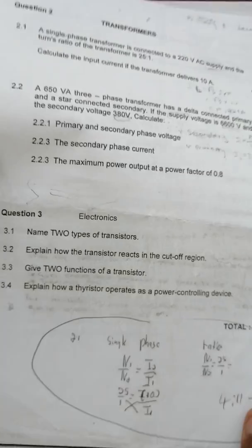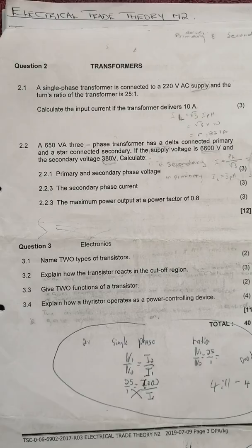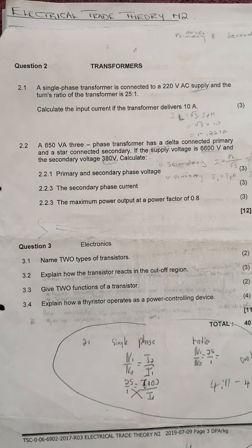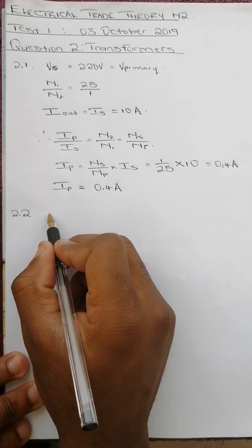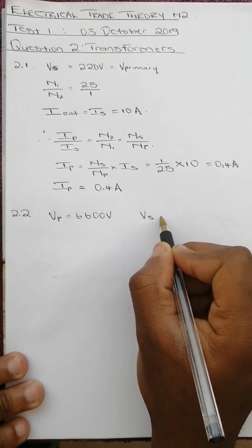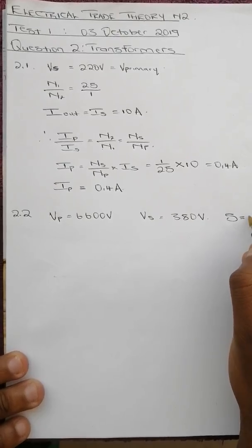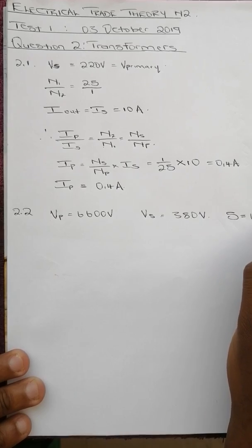Question 2.2: A 650 volt-amps three-phase transformer has a delta-connected primary and a star-connected secondary. The supply voltage is 6600 volts and the secondary voltage is 380 volts. Calculate the primary and secondary phase voltage, the secondary phase current, and the maximum power output at a power factor of 0.8. Our primary voltage is 6600 volts, secondary voltage is 380 volts, and apparent power S is 650 volt-amps.